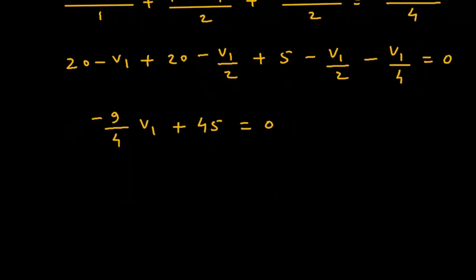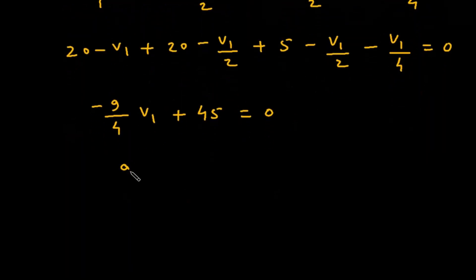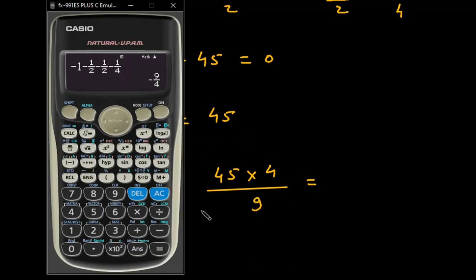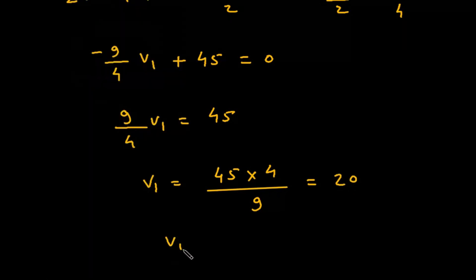Therefore, 9/4 V₁ = 45, so V₁ = 45 × 4/9. Therefore, V₁ equals 20 volts.